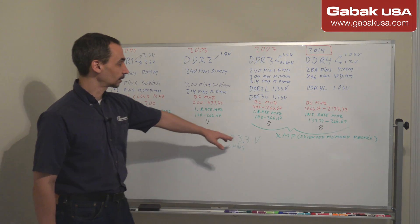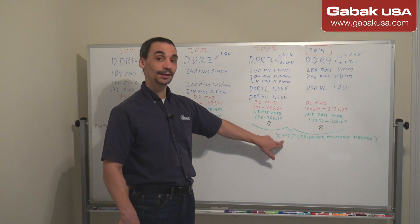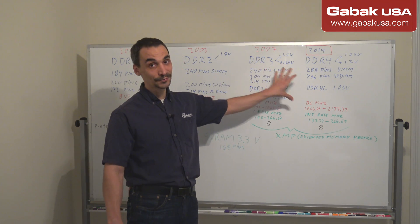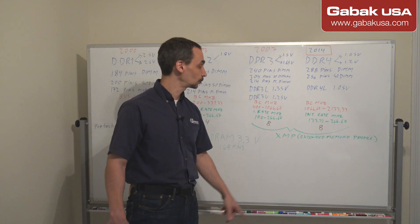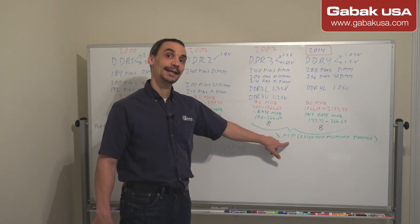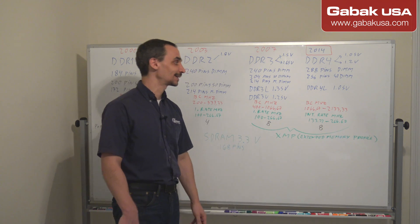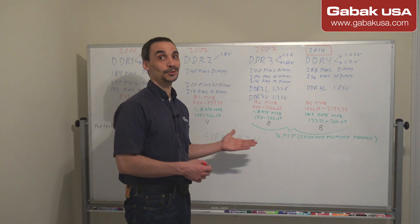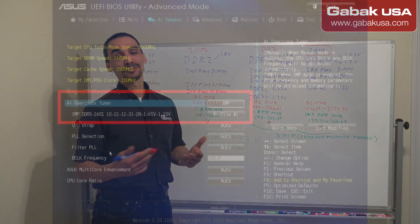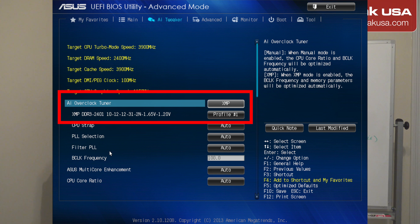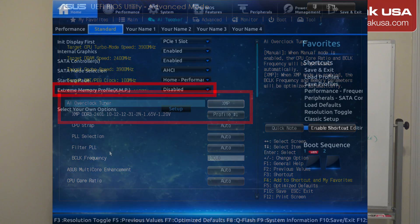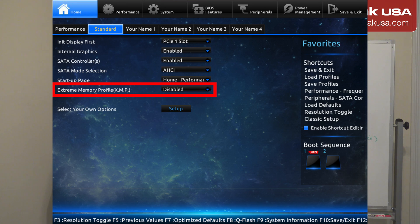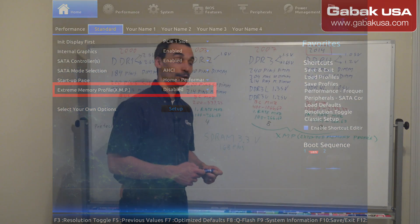Another important feature in DDR3 and DDR4 is XMP — Extended Memory Profile. If you want to perform overclocking on your computer, look for XMP support in both the RAM and the motherboard, and that way you're going to be able to perform all those things.